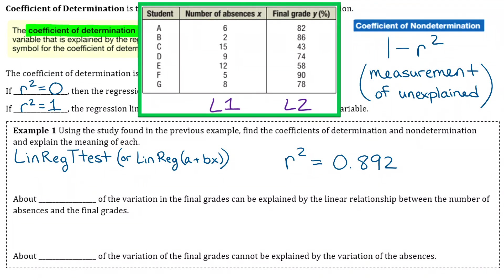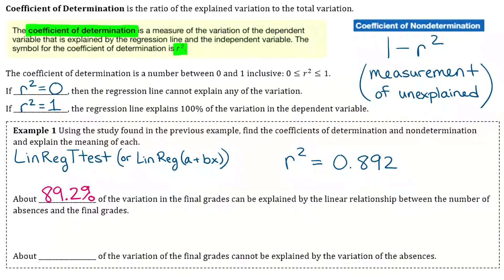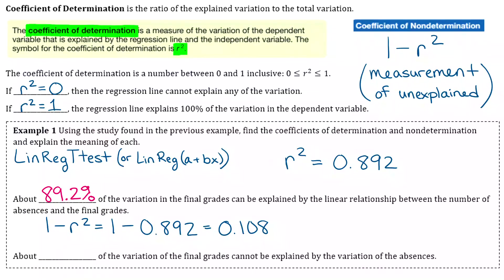What does that mean? That tells us that about 89.2% of the variation in the final grades can be explained by the linear relationship between the number of absences and the final grades. For the coefficient of non-determination, it's just 1 minus r squared — so 1 minus 0.892 — which comes out to 0.108. That tells us about 10.8% of the variation of the final grades cannot be explained by the variation of the absences, which is probably just due to chance.